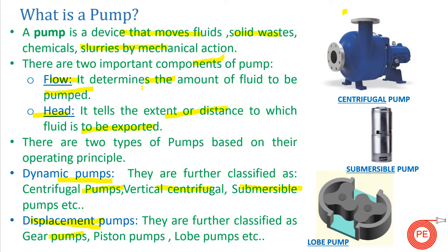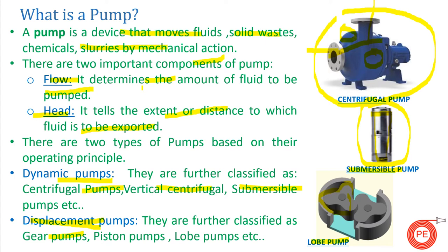Looking at a figure here, this is how centrifugal pumps look. Centrifugal pumps are basically of two types: front suction and top discharge, and side suction side discharge. Another type shown is the submersible pump, where the motor and impeller are both enclosed in a casing that is submerged in water — that's why it is known as a submersible pump. Also shown are lobe pumps, where lobes move the fluid from one place to another.